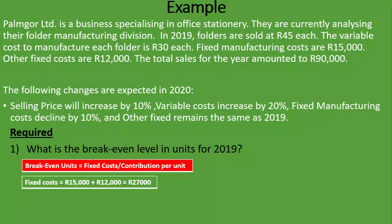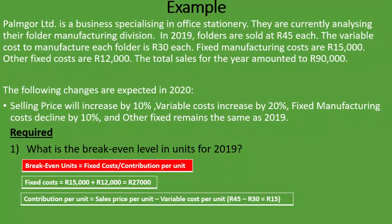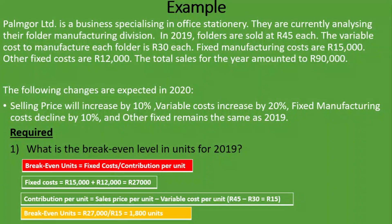What is the contribution per unit? We are given the sales price per unit of R45 and the variable cost per unit of R30. The contribution per unit equals sales price per unit minus variable cost per unit — that's R45 minus R30 — giving us a contribution per unit of R15. So our break-even units equals R27,000 divided by R15, which gives us 1,800 units.